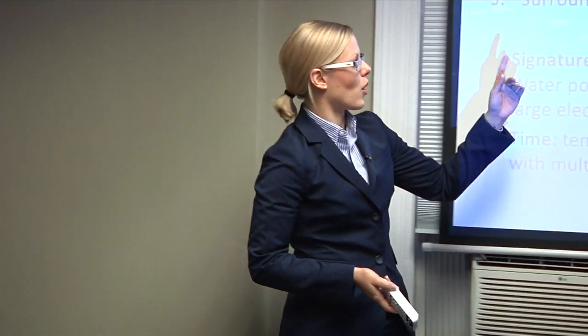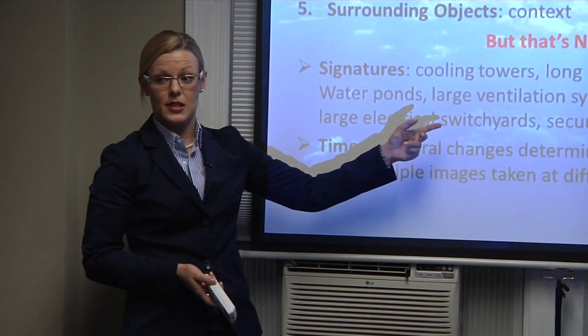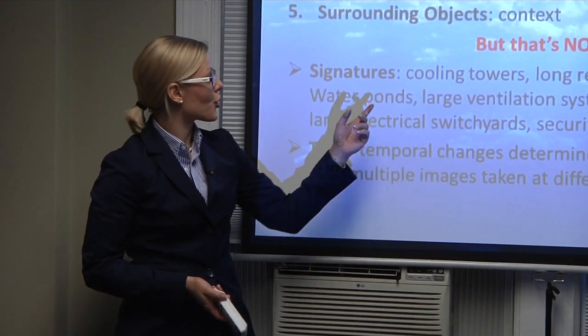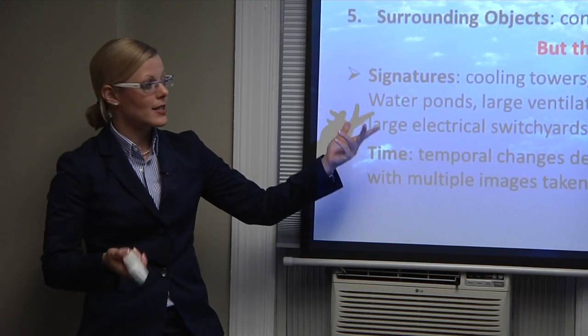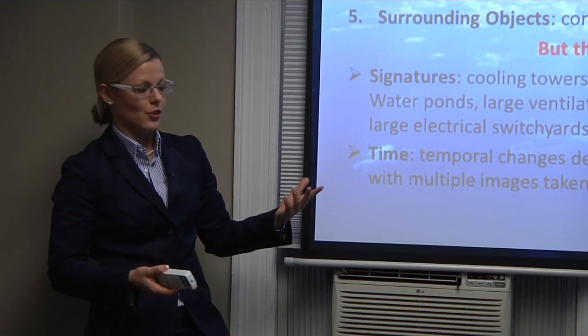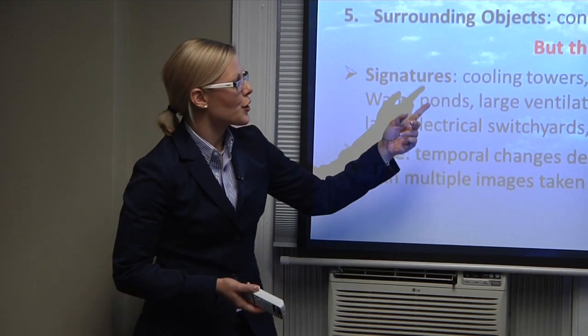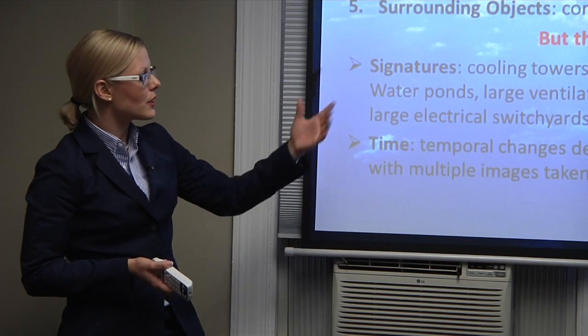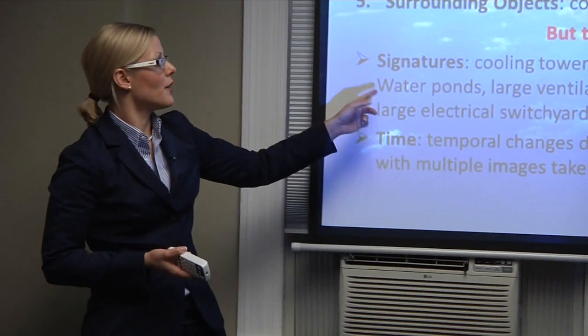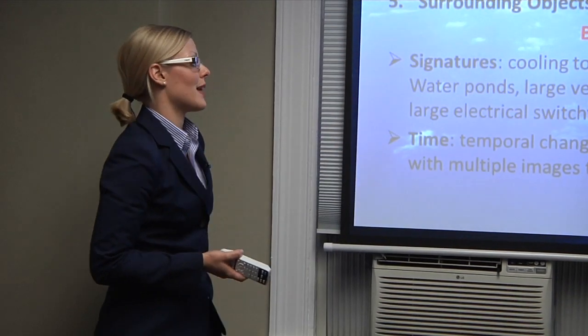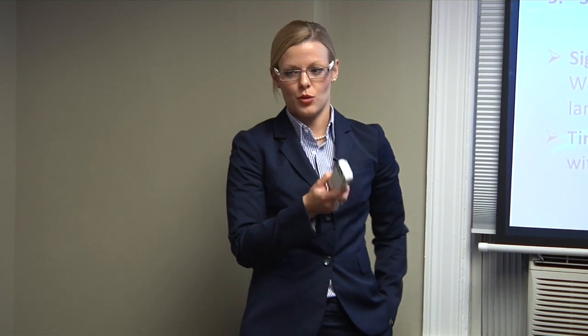For nuclear non-proliferation purposes, you also look for very specific signatures: cooling towers, large ventilation systems — excellent signatures. You always want some sort of cooling area, so you look for water ponds or rivers. A reactor needs a cooling system, so you look for a water source. For enrichment, you look for long rectangular buildings. For reactors, domes. These are all heavily secured perimeters — very good signatures. And you always look at temporal changes, because looking at a site on one day usually won't get you anywhere.